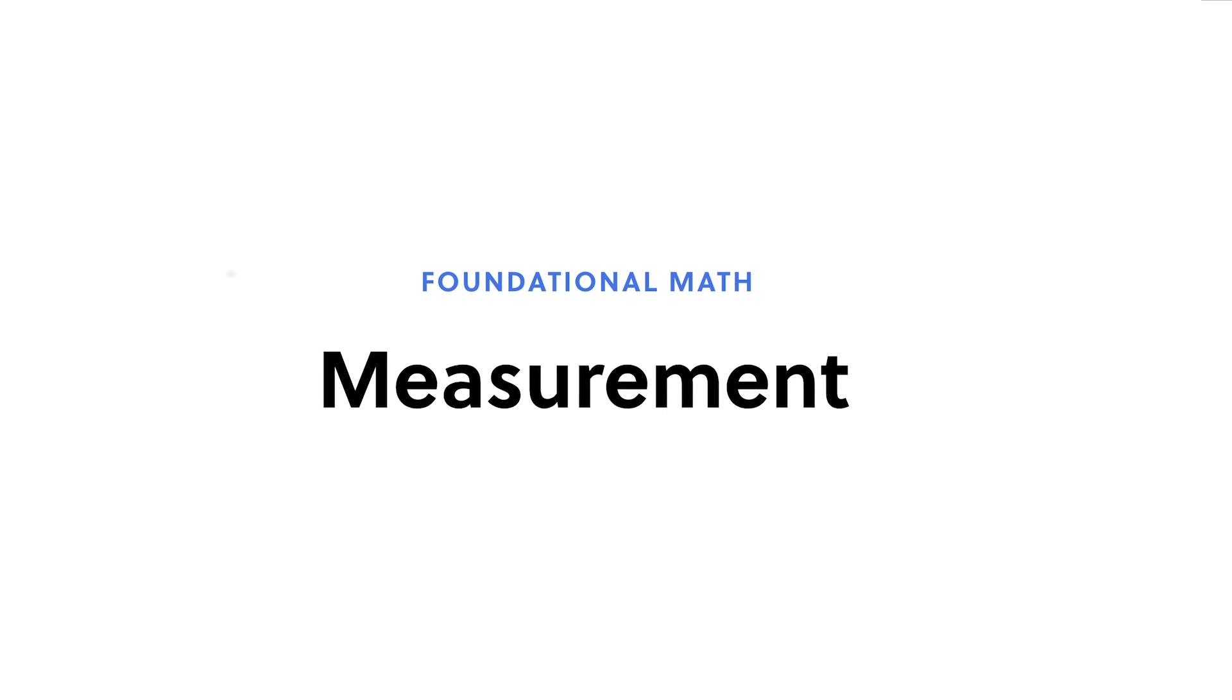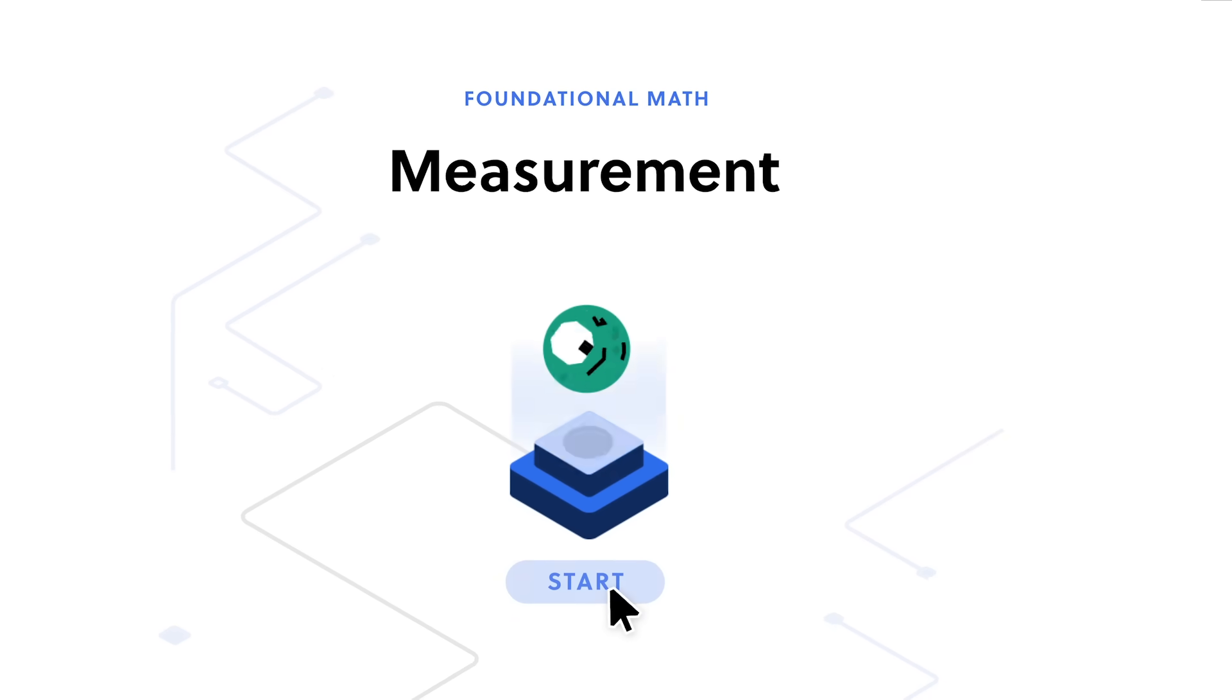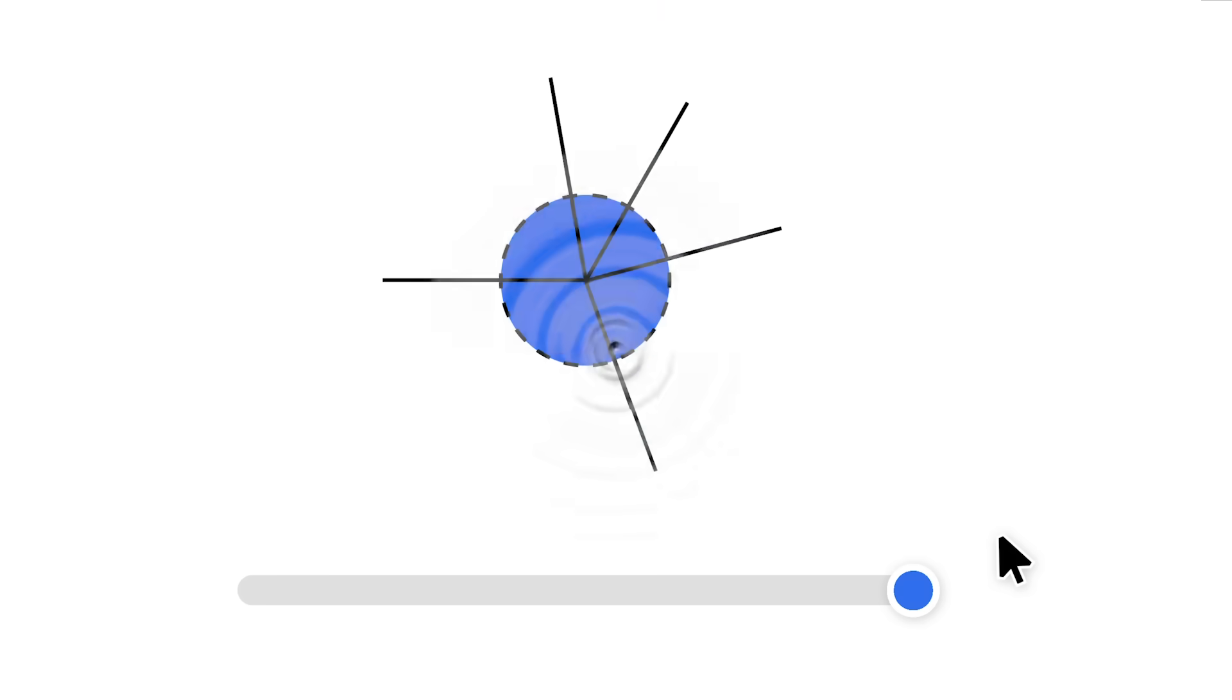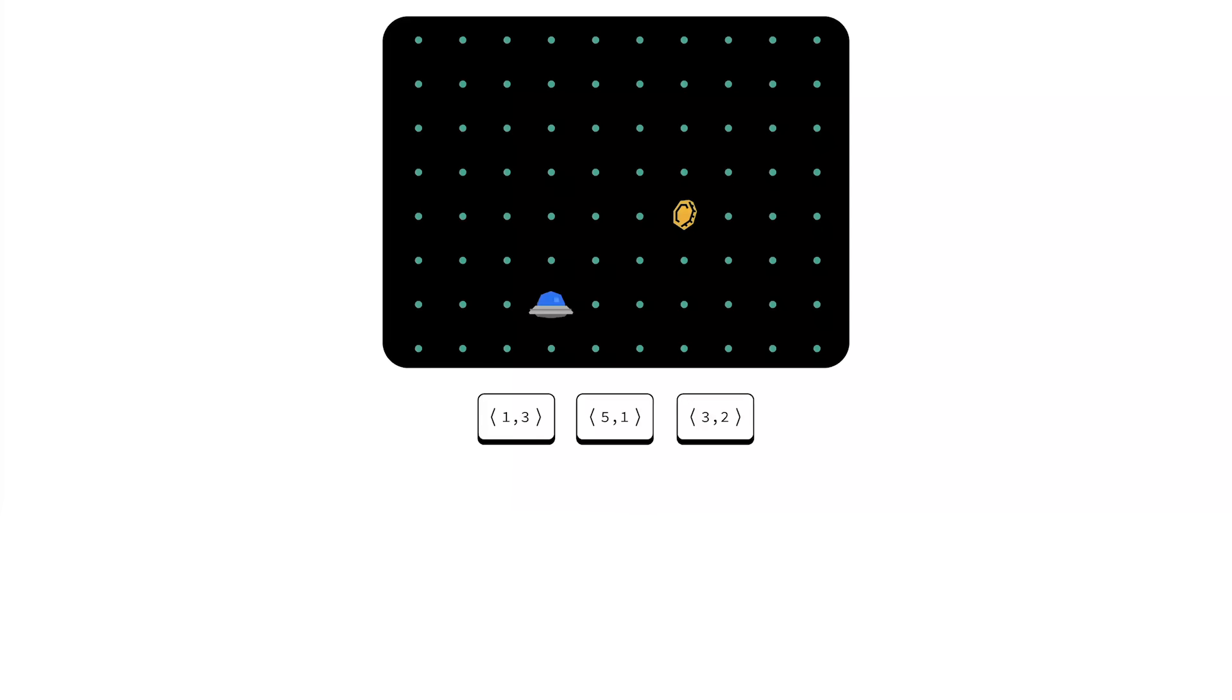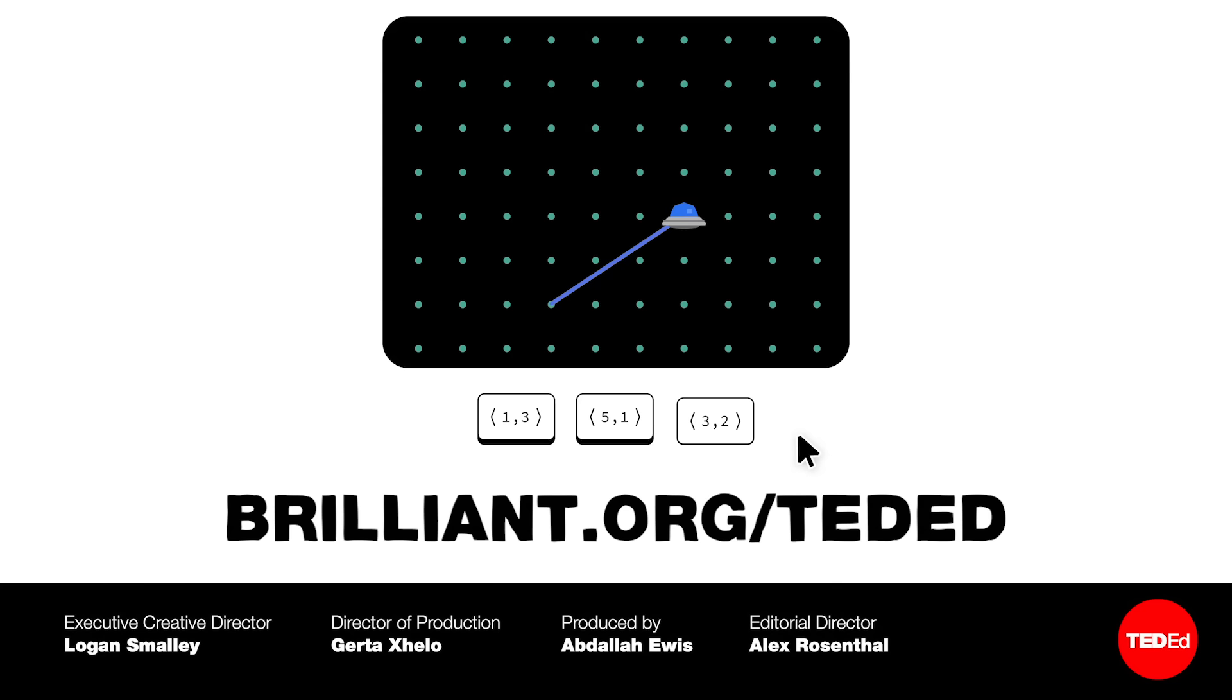If you're looking for a free and easy way to continue your exploration of the beautiful and bizarre within the world of math, we'd recommend Brilliant.org. If you visit Brilliant.org slash TedEd today, you can get 30 days free and 20% off a year of STEM learning.